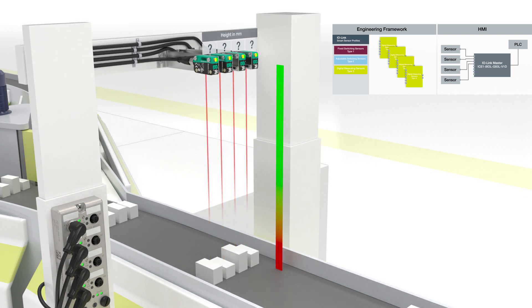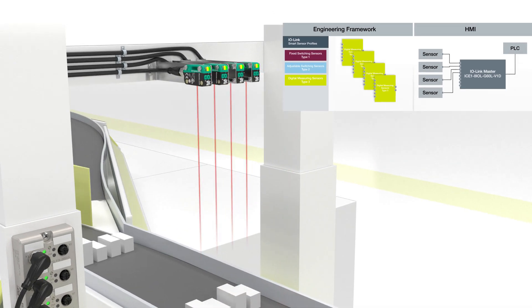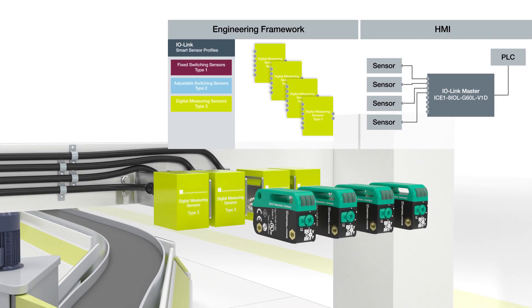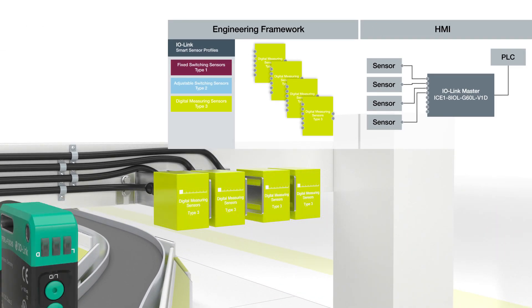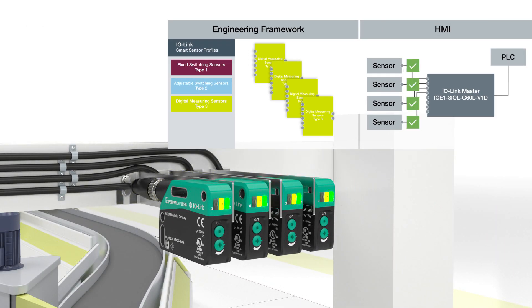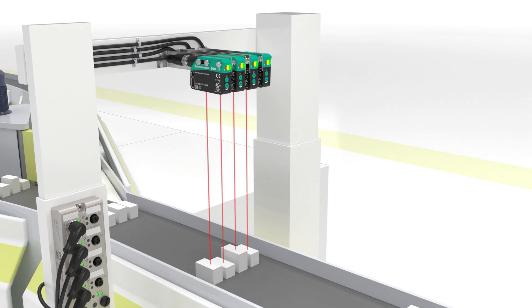Thanks to IO-Link, adapting to new conditions in a machine or plant is no longer a problem. For instance, if longer operating distances are required, the sensors can simply be replaced by devices with a longer sensing range.